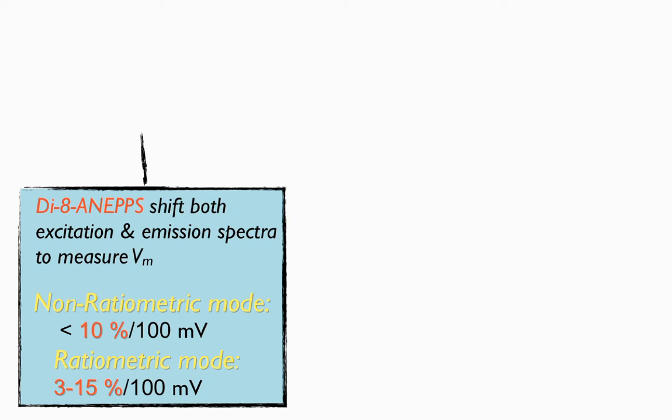Generally, when this dye has been used in a non-ratiometric mode, for example, looking at a single wavelength, the sensitivity is less than 10% per 100 mV, and in the ratiometric mode, between 3 to 15%.